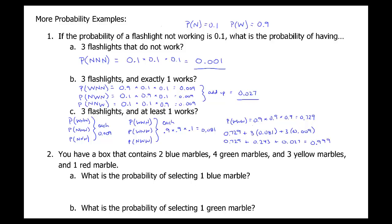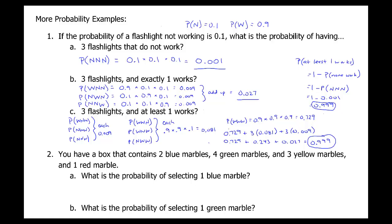That was a lot of work. Let's use the complement rule instead. The complement of 'at least one works' is 'none work.' So P(at least one works) = 1 − P(none work). We already calculated P(none work) = 0.001. So 1 − 0.001 = 0.999. The short way gives the same answer.